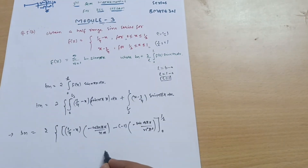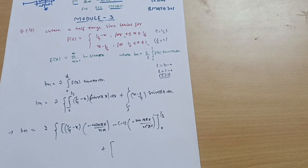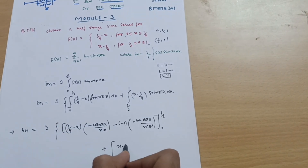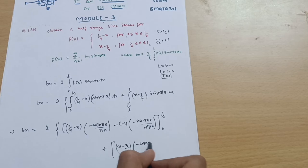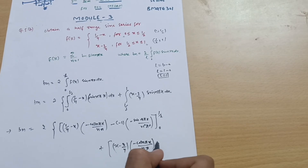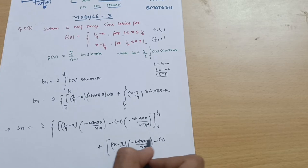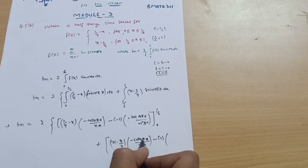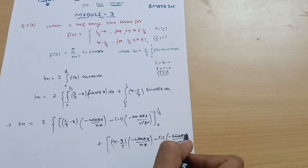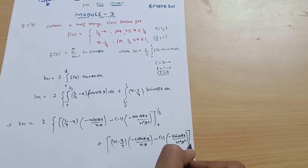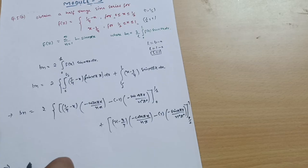Applying the same Bernoulli's rule to the second integral: keep (x − 3/4) as is, integrate sin(nπx) to get −cos(nπx)/(nπ), then subtract the derivative of (x − 3/4) — which is 1 — times the integral of −cos(nπx)/(nπ), giving −sin(nπx)/(n²π²). Limits run from 1/2 to 1.